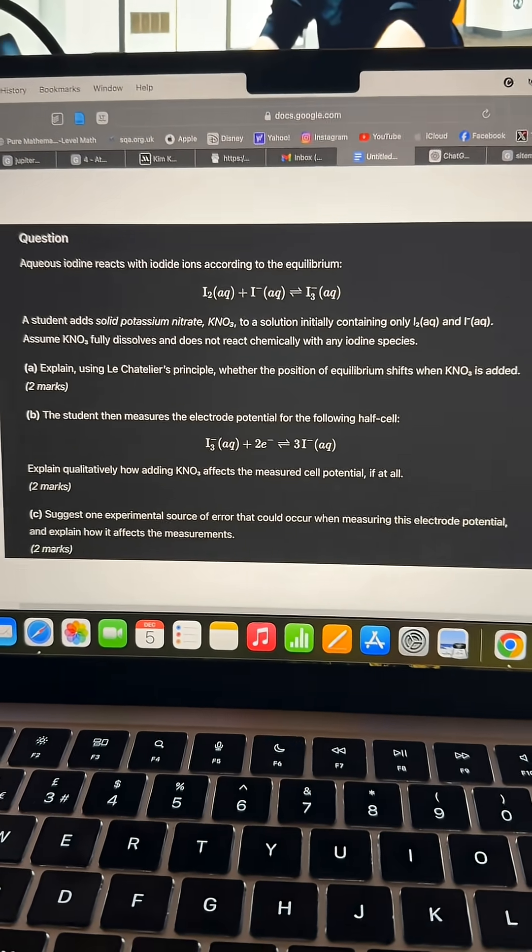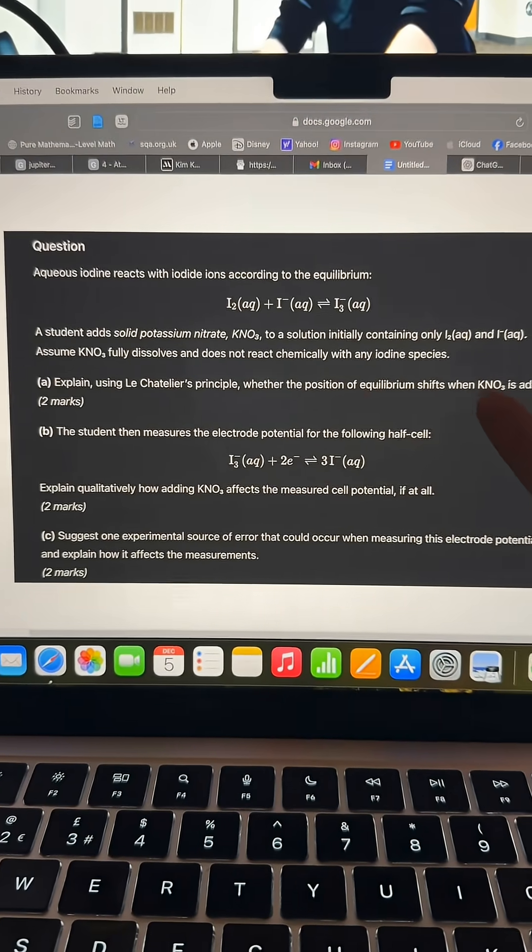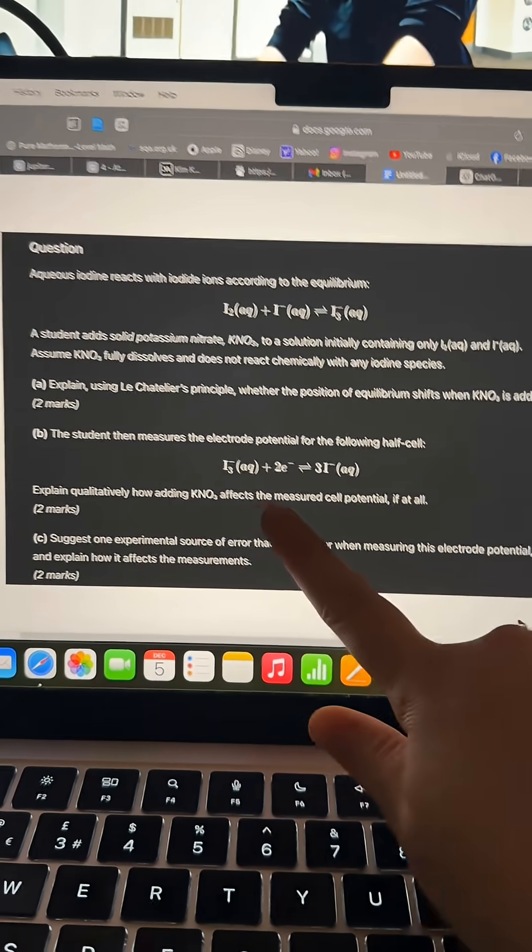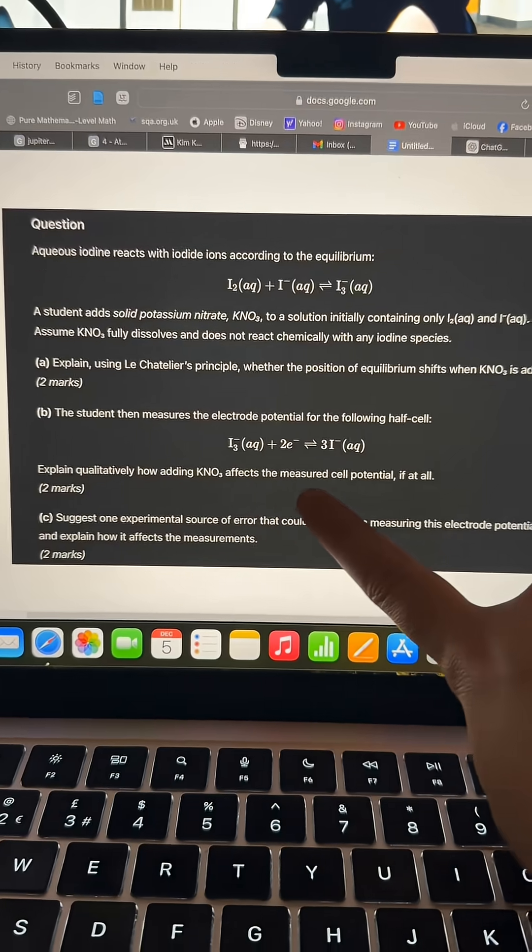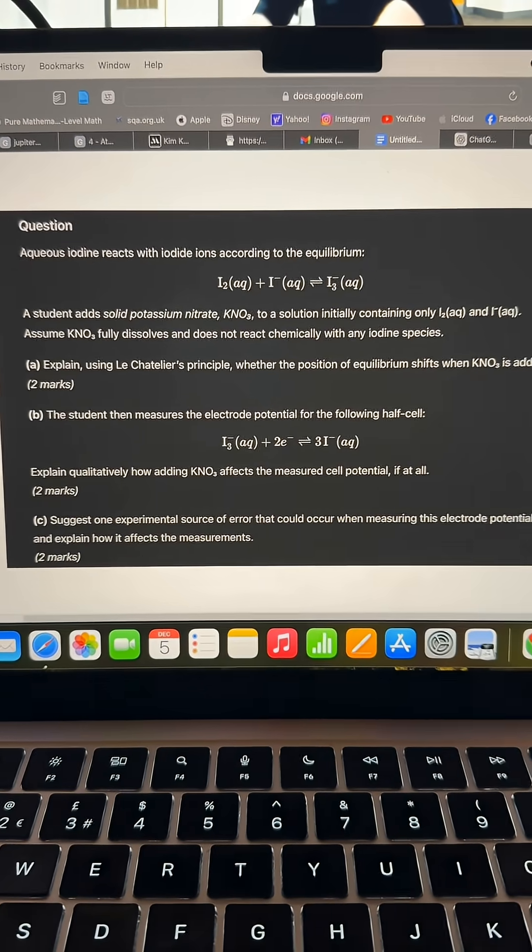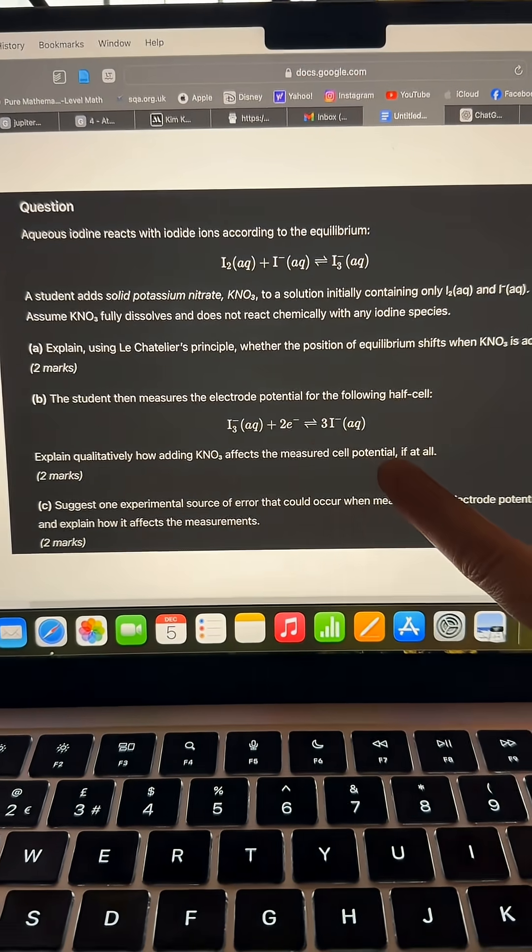So I'm pointing it out now so that you will do it. We're going to skip the first one because that's pretty obvious, it's just using your knowledge on that. But the second one says explain qualitatively how adding KNO3 affects the measured cell potential if at all. This is where you need to find the clues in the question.